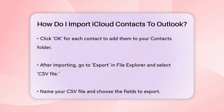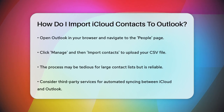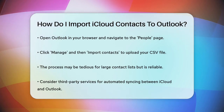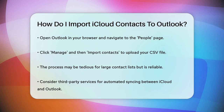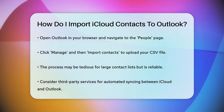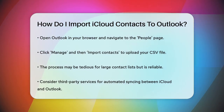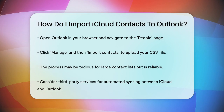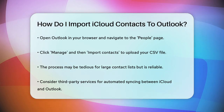This process might seem a bit tedious, especially if you have a lot of contacts, but it's a reliable way to get your iCloud contacts into Outlook. If you're looking for a more automated solution, you can also use third-party services that sync your iCloud and Outlook contacts in both directions, ensuring any updates are reflected in both accounts. Whether you choose the manual route or a sync service, moving your contacts from iCloud to Outlook is definitely doable with a few simple steps.